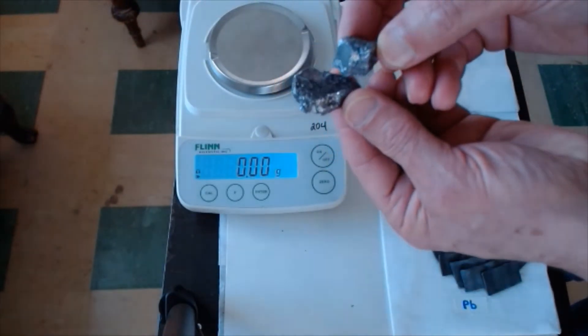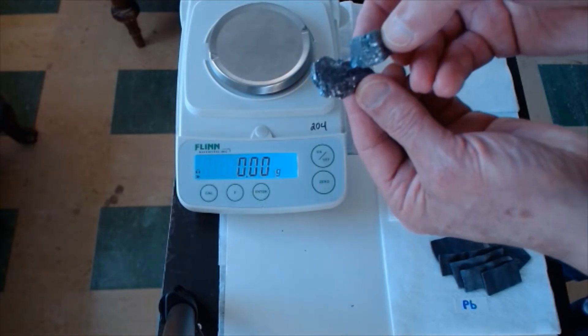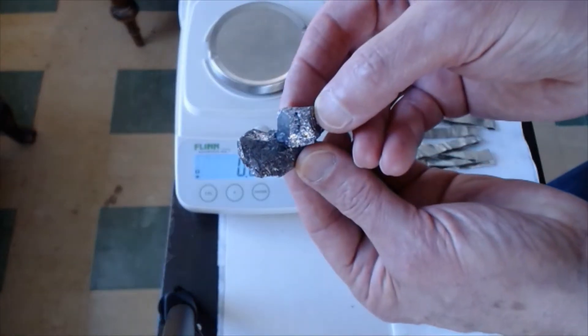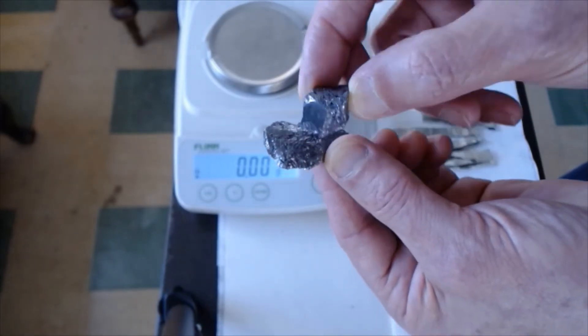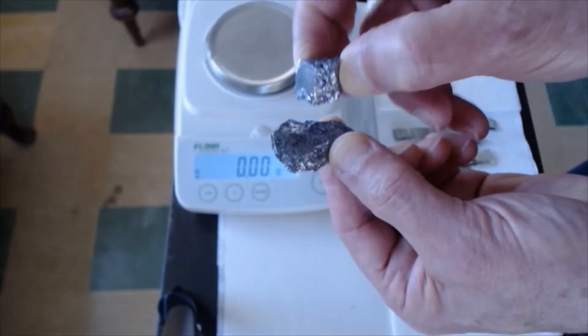You can see it's in the metalloid section of the table, so you would not expect it to look necessarily like a metal. You can see that it's kind of shiny and rock-like, kind of brittle.